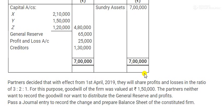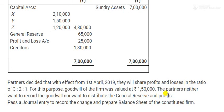The partners decided with effect from 1st April that they will share profit and loss in the ratio of 3:1 — this is the old ratio and this is the new ratio. For this purpose, goodwill was valued at ₹1,50,000. The partners neither want to record the goodwill nor want to distribute the reserves and profits. If they don't want to record goodwill, the entry passed will be gaining to sacrifice. Similarly, if they don't want to distribute reserves and profits, the entry will again be gaining to sacrifice.